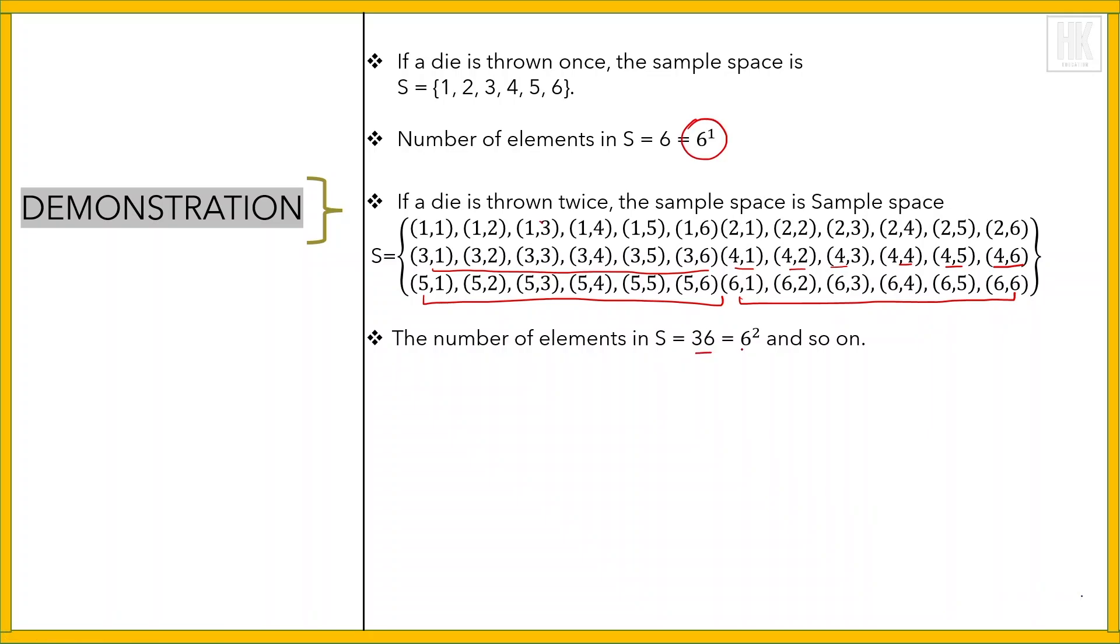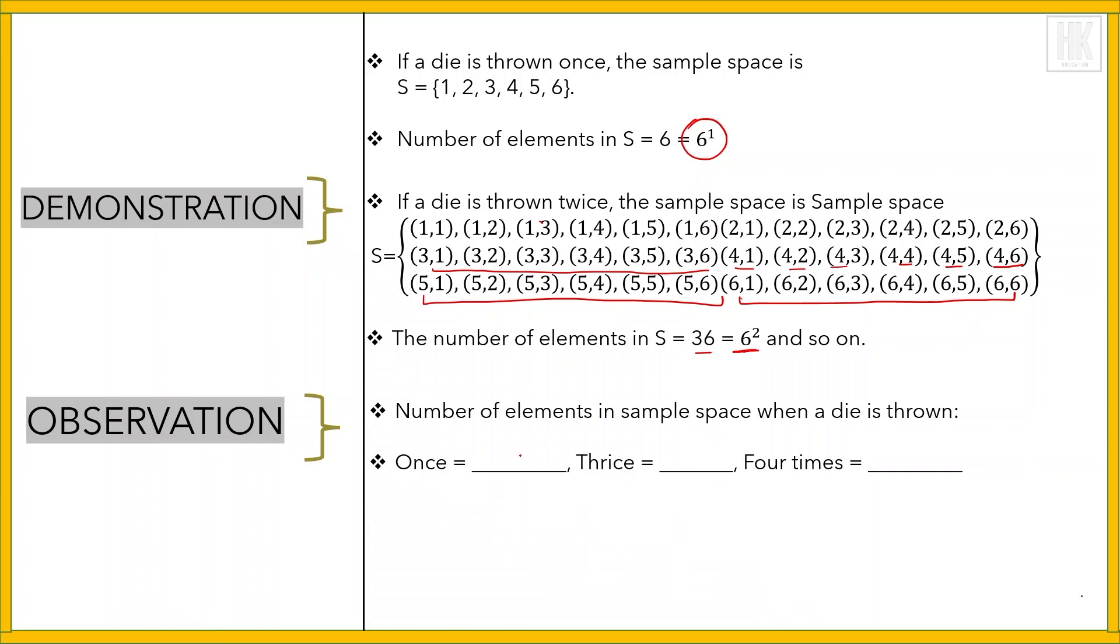Observation: number of elements in sample space when a die is thrown once is 6, thrice is 6 cubed, four times is 6 to the fourth. Application: sample space of an experiment is useful in determining the probabilities of different events associated with the sample space.